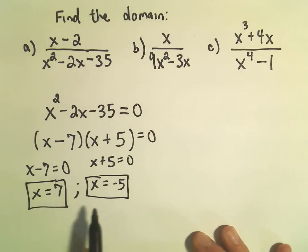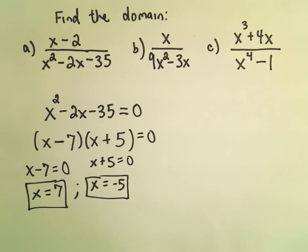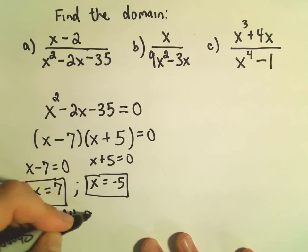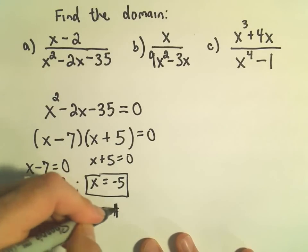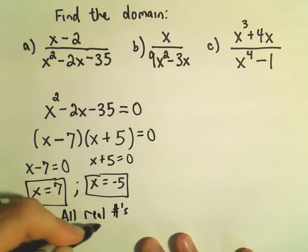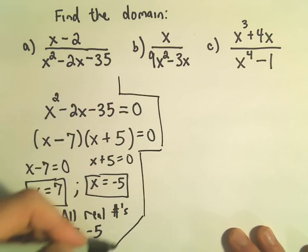So again, what that says is, it says 7 and negative 5 will produce 0 in the denominator, and that's bad. So in this case, we would say the domain is all real numbers except 7 and negative 5. That's it. That's the main idea. So let's do these other two examples real quick.